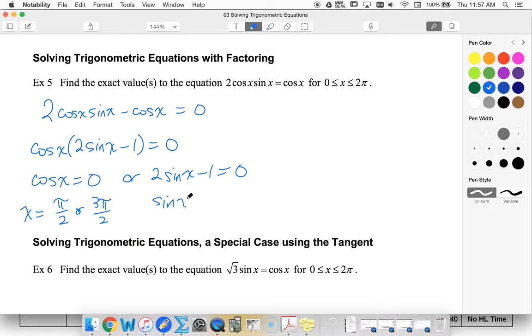Sine x is a half. I know that that happens. So I want the short angle from zero to two pi. I'll get pi over six or five pi over six.